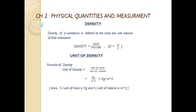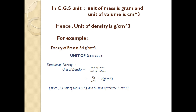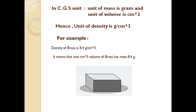If we discuss about CGS unit, in CGS unit the unit of mass is gram and unit of volume is centimeter cube. Hence the unit of density in CGS system is gram per centimeter cube.